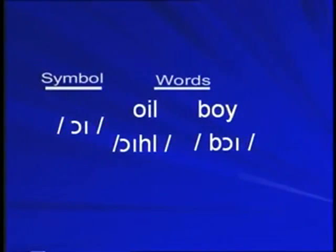The next vowel sound is found in words like oil and boy. Here also you must put your lips round, as you do when saying words like pot and hot. Say the words: Oil. Boy. Correct.